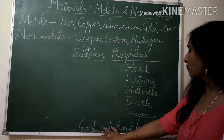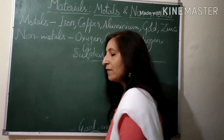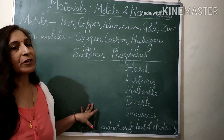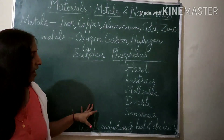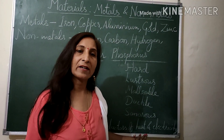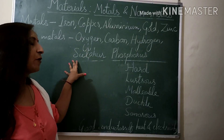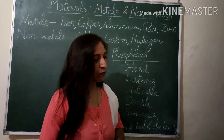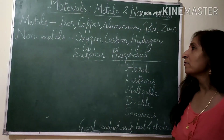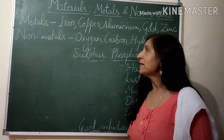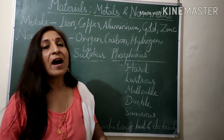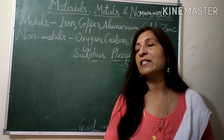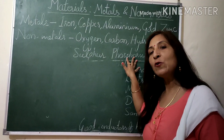Metals are also good conductors of heat and electricity — they get hot quickly and can pass electric current through them. That is why cooking utensils are made of metals and metals are used for making electric wires. Non-metals are poor conductors of heat and electricity. Additionally, metals have a high melting point, meaning they need to be heated to a very high temperature before they start melting, while non-metals have a low melting point.